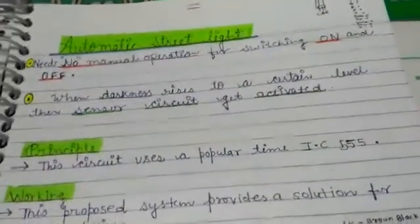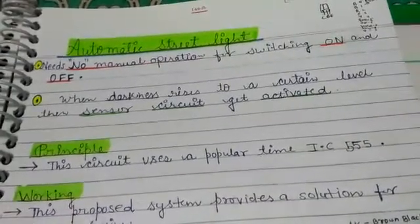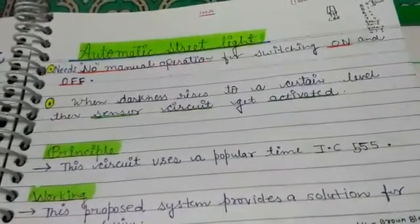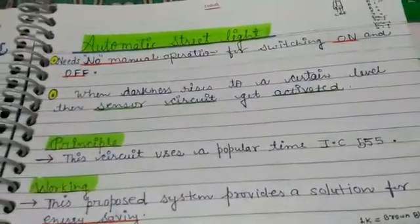Hello friend, my name is Zanjana and today I am telling you about automatic street light. Automatic street light is useful because no manual operation is needed for switching on and off.